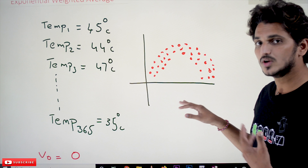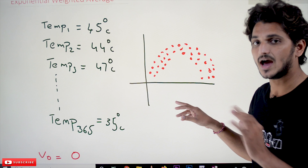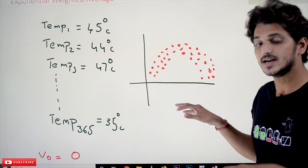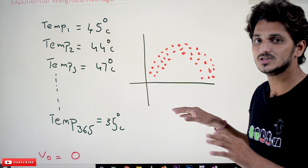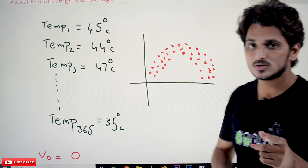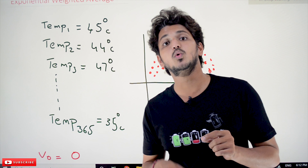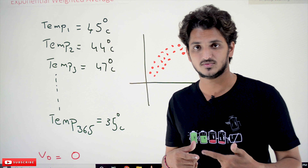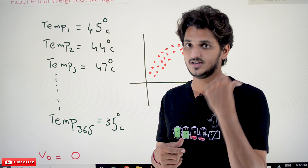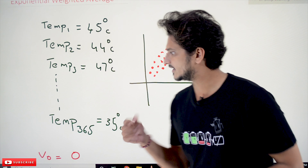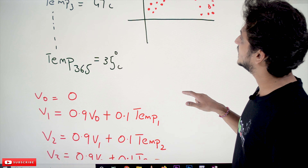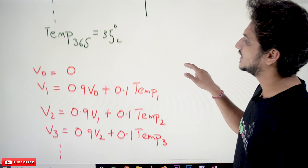Now we will calculate the exponential weighted average — what it is and how to calculate it. At the end we will understand what the use of calculating exponential weighted average is. We also call this the exponential moving average. Why we call it exponential moving average, we will understand at the end of the class. So now let's understand how to calculate the exponential weighted average.